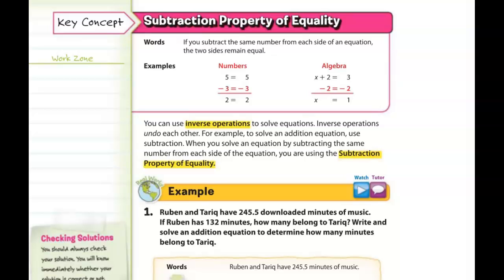For an example, if you have five equal to five, but if you were to subtract three from both sides, you would then have two on each side and it's still equal — two equals two. And for what it's worth, negative three is equal to negative three as well.